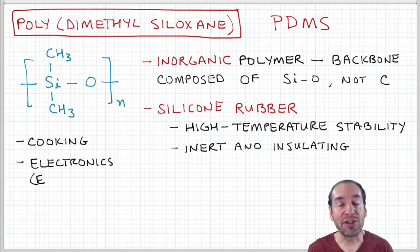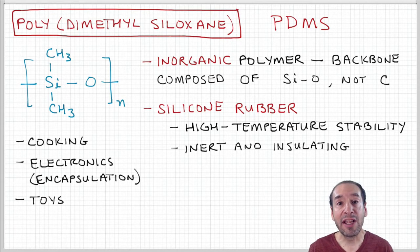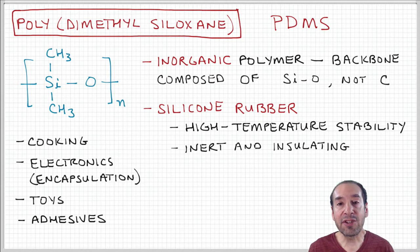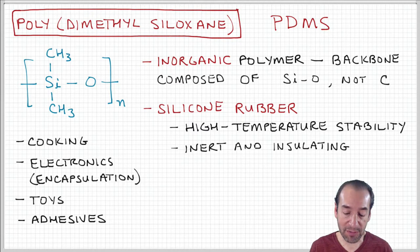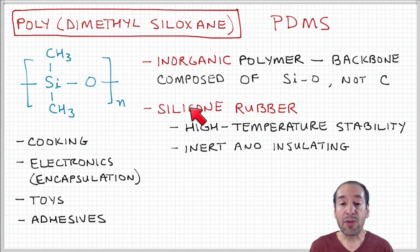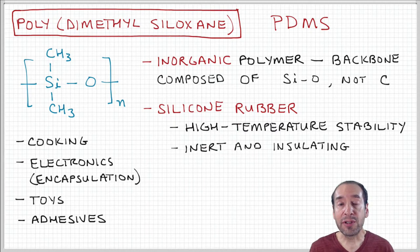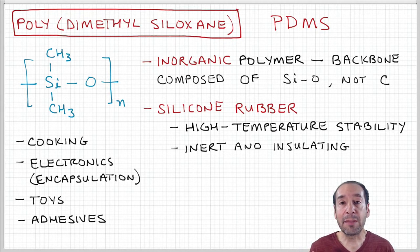As you can imagine, this change from carbon to silicon and oxygen greatly changes the properties of the polymer material. One of the main applications of these materials is in a cross-linked form to make what's called silicone rubber. When these chains are cross-linked, they form soft materials that have very high temperature stability, and they're also very chemically inert and insulating.